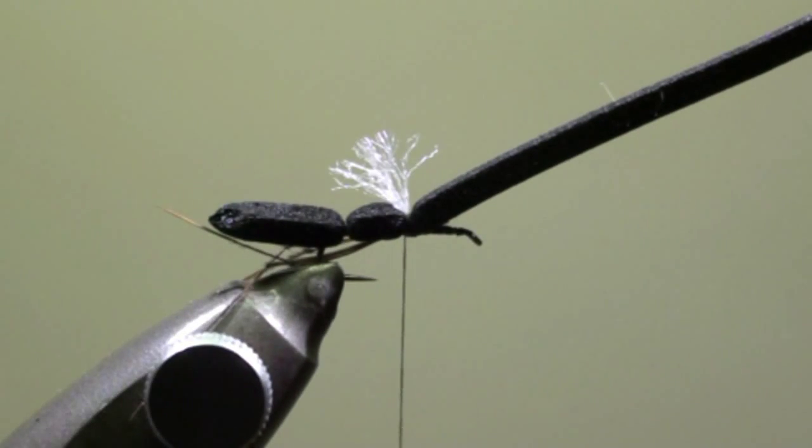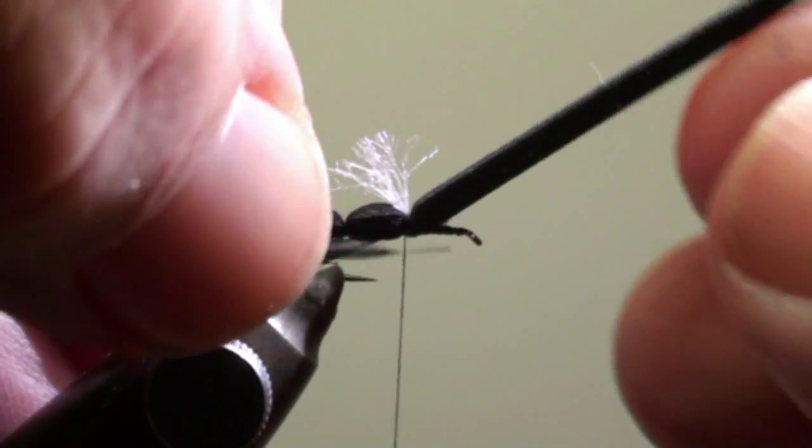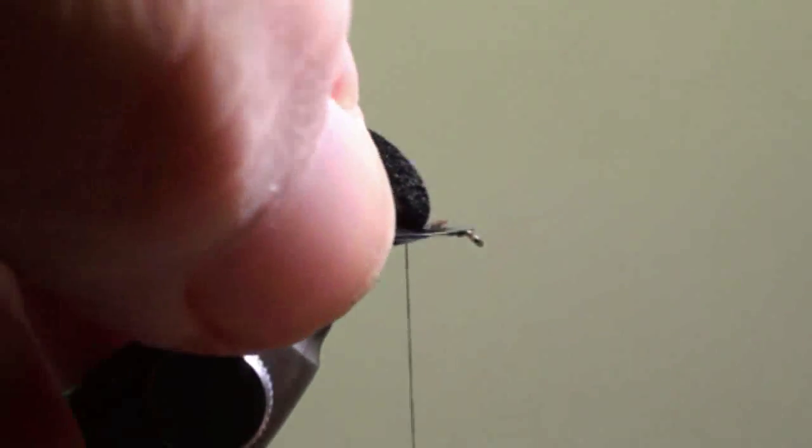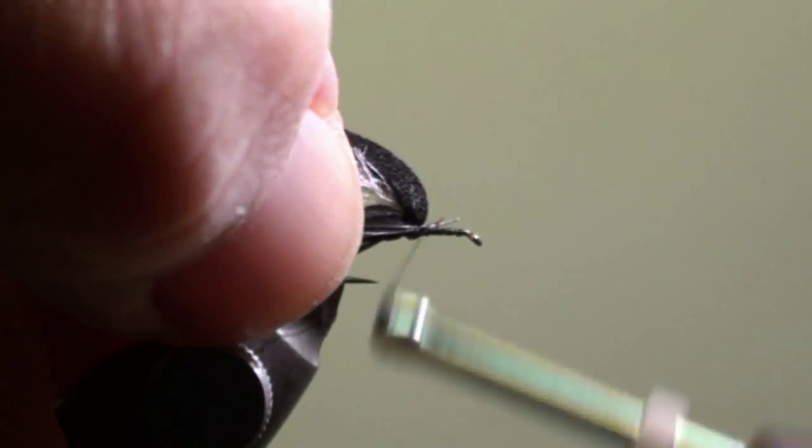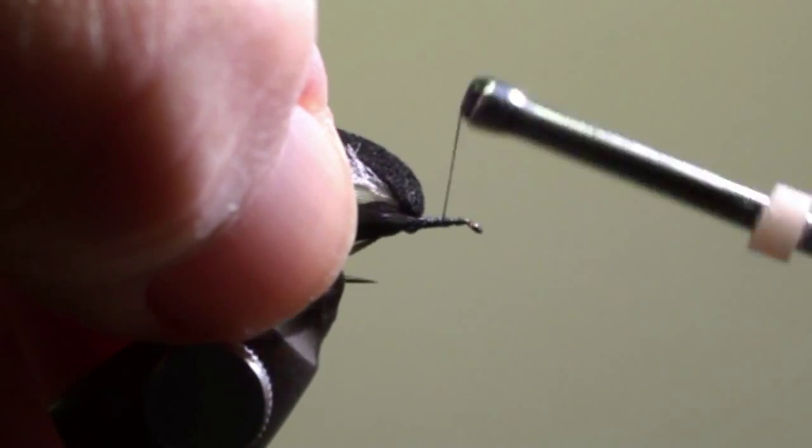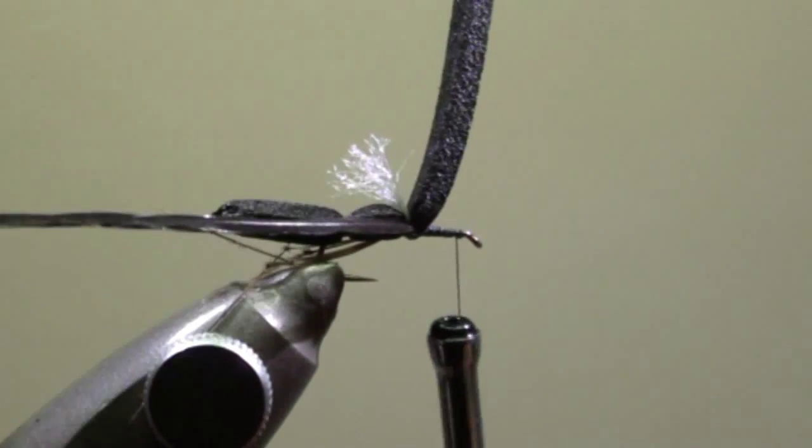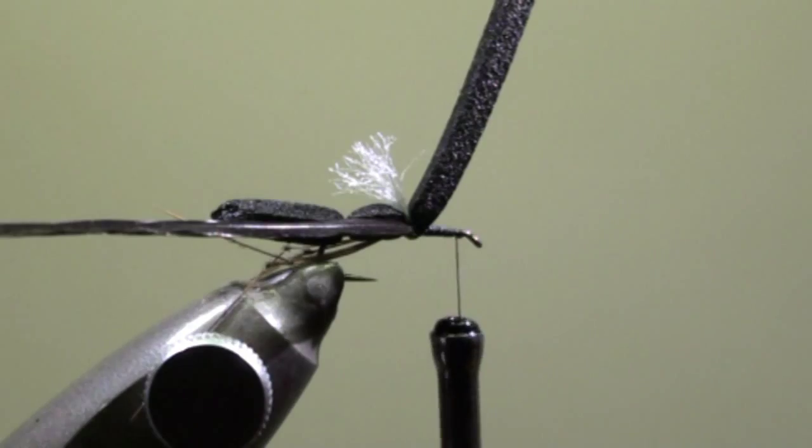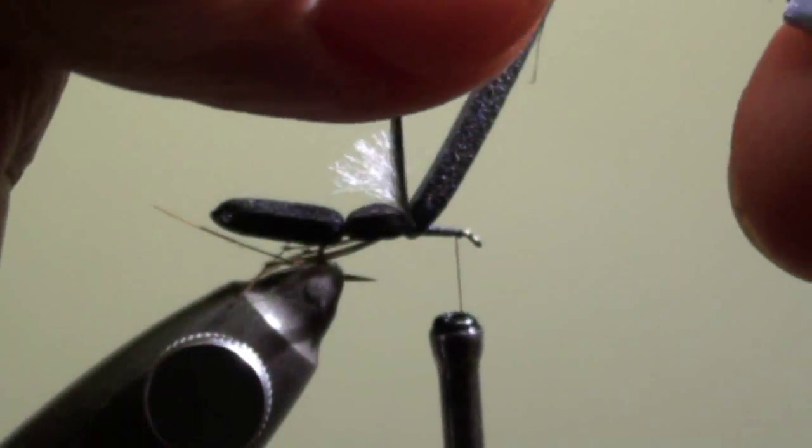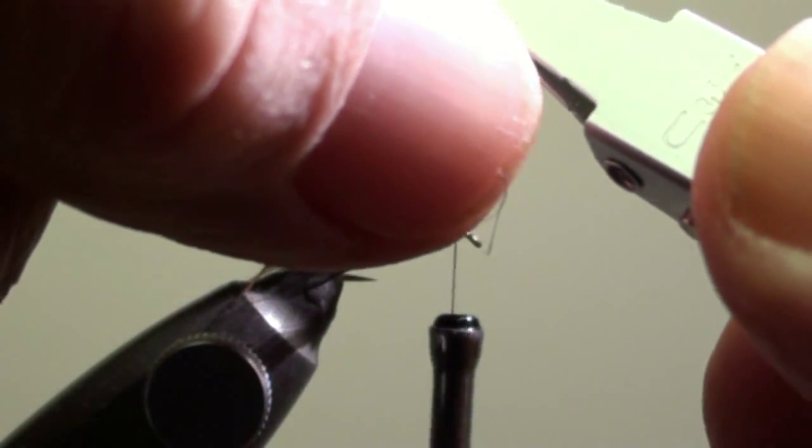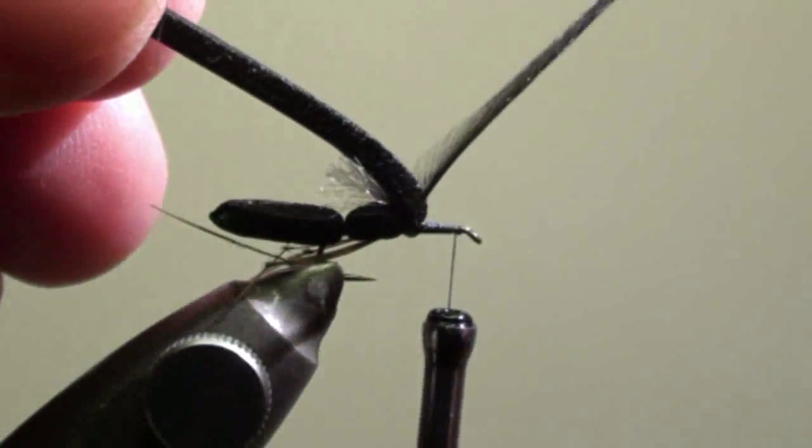Then we will tie in the small black cock feather in front of the foam strip, secure it, clamp it in our hackle pliers and wind a few turns of hackle in front of the foam strip.